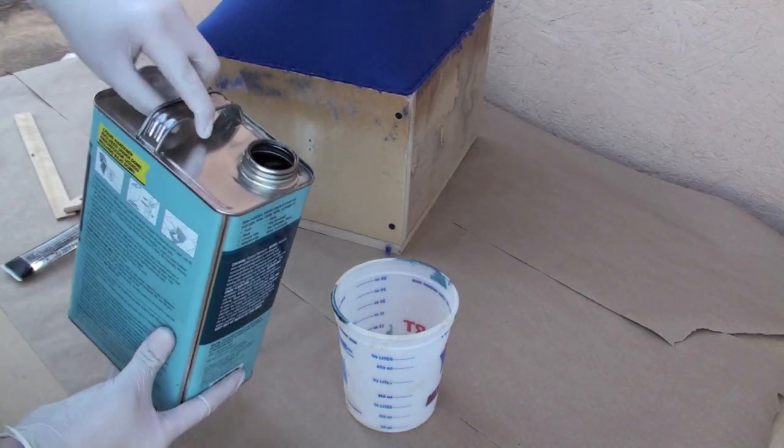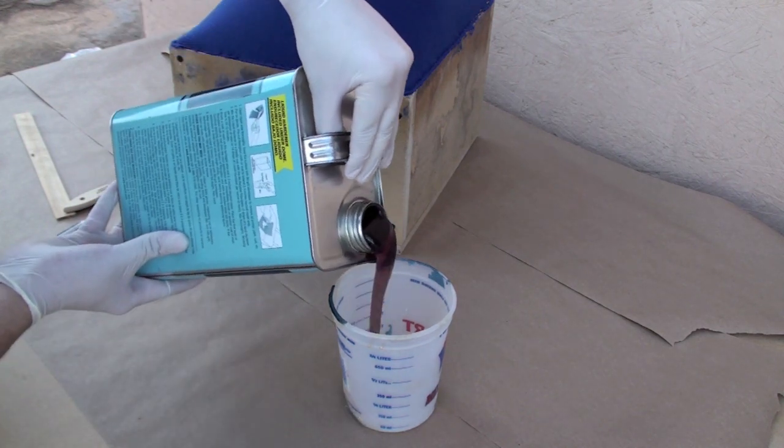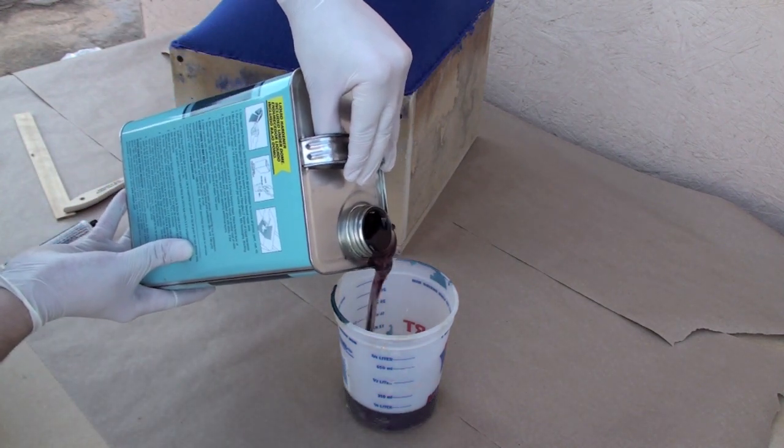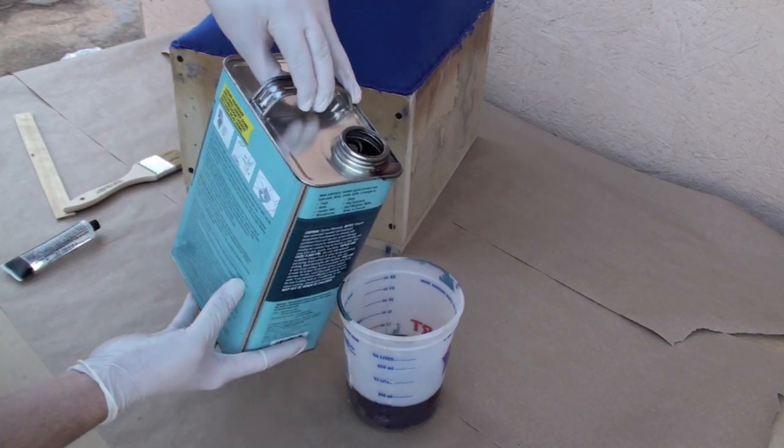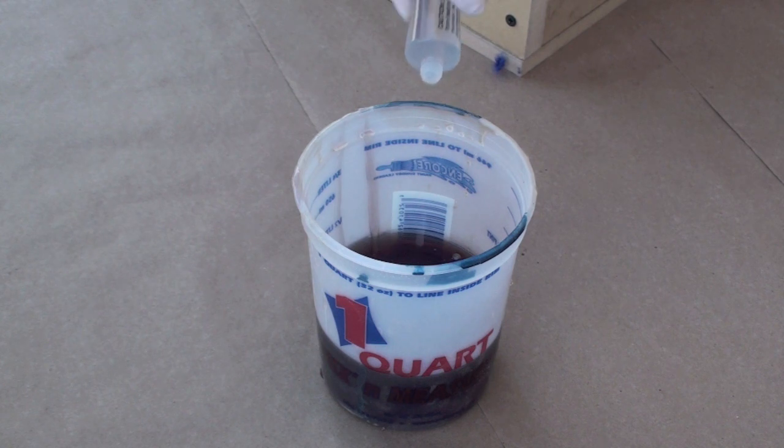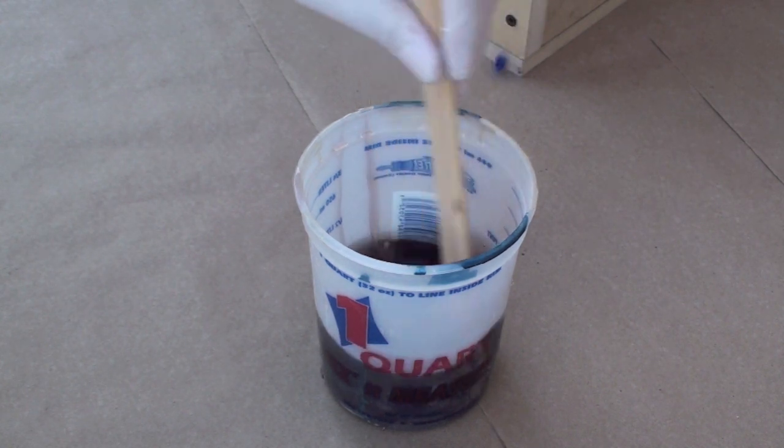Now put on your fume mask and gloves and pour the fiberglass resin. Add the required MEKP hardener according to the container and mix it thoroughly.